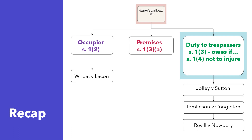Before we tackle this question, it's a good idea to make sure you're familiar with the law — I'm not going to go through all of the law and principles today, we're just going to focus on the answer. As a brief refresher, we are looking at the 1984 Act. We need to identify who the occupier of the land is, check that we have premises for the purposes of the Act, and then look at what duty is going to be owed, if any, to Homer. I've listed a few key cases that might be useful.